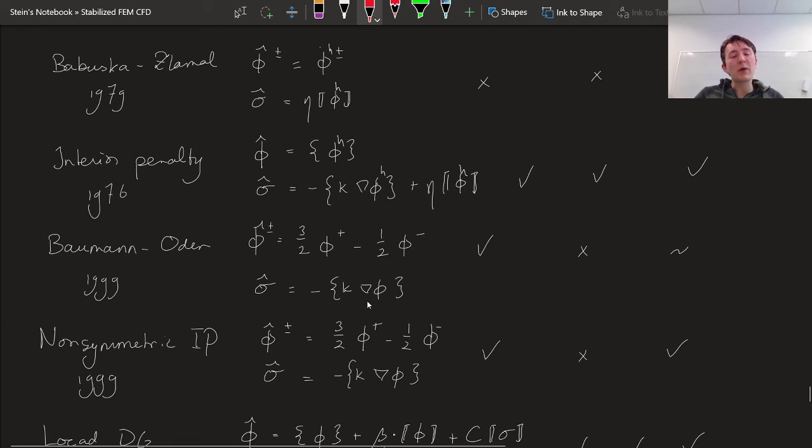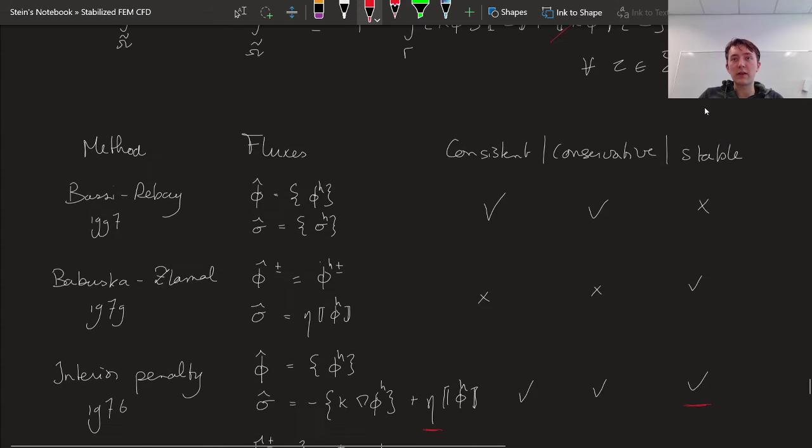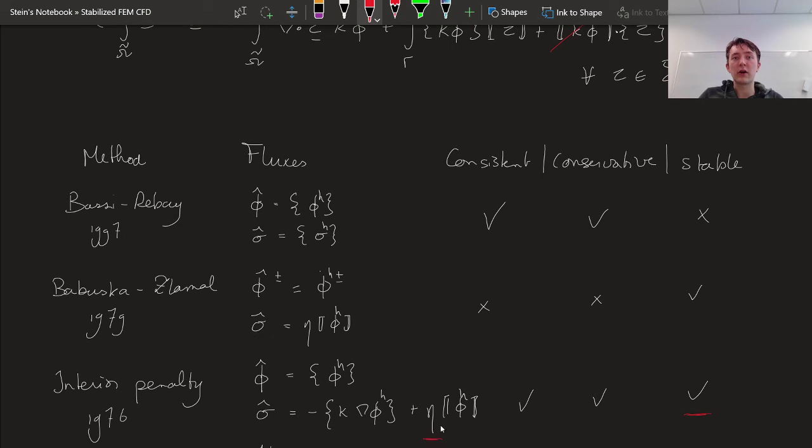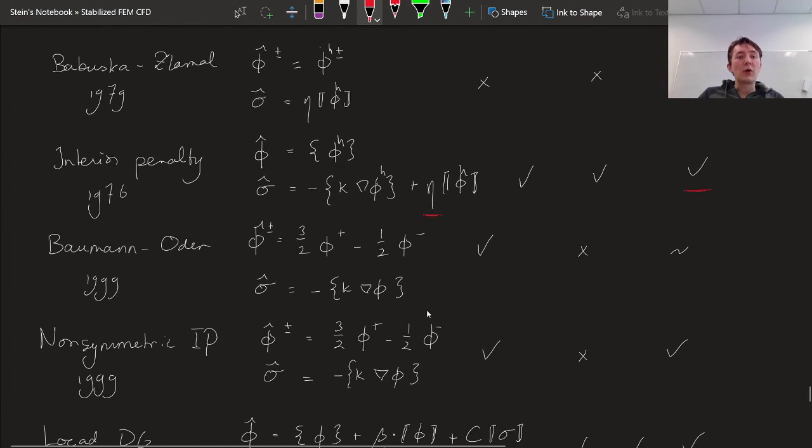So this method is the first one that checks all the boxes. And that's why it's still being used. And it's actually a very effective method. This is also the method that we'll look into more after I've walked over all of the entries in this table. Then we have Bauman-Oden method. Bauman-Oden method was inspired or was developed because they were a little bit unhappy with this parameter right here. This is the penalty parameter and only with particular choices do we get a stable scheme. So they tried to somehow get away from having to choose a certain penalty.